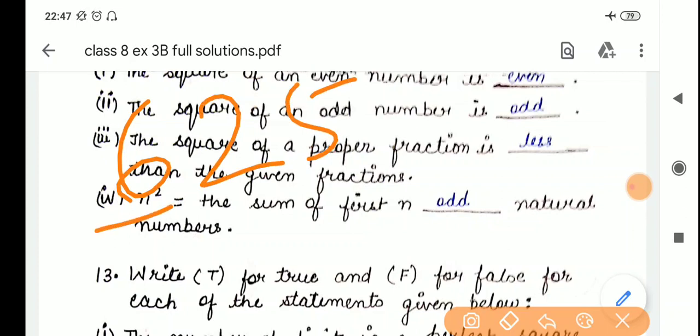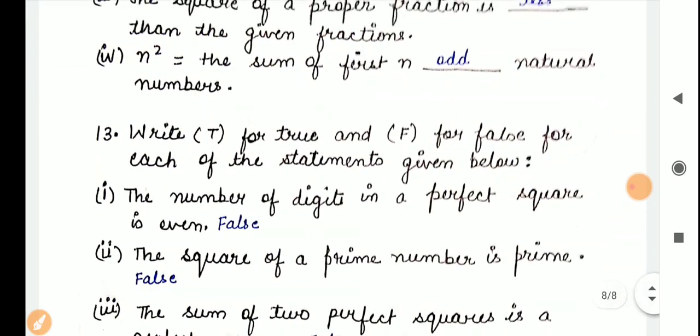So, they are saying, number of digits, digits are 6, 2, 5. So, number of digits, 3 digits are there. Is it even? No. It can be odd also. So, it is false.